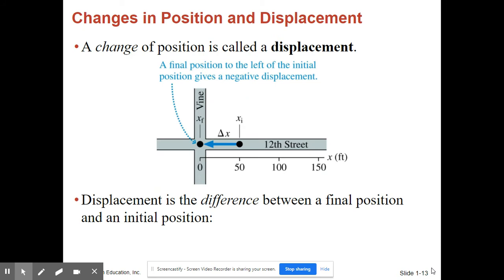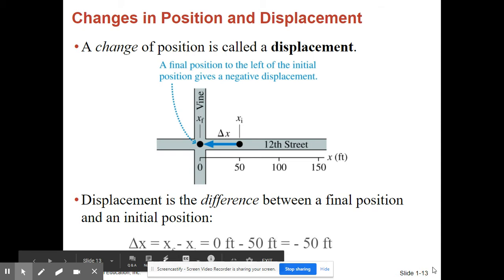A change of position is called a displacement. Displacement is the difference between a final position and an initial position, and you always do final minus initial. So in this case we're going to use delta x to represent displacement. So our final was at zero feet minus our initial was at 50 feet. So we get negative 50 feet as our displacement. Since we're going left, we're going west, it is the negative direction.